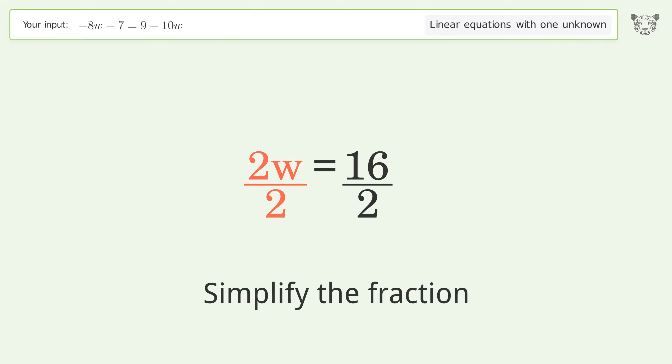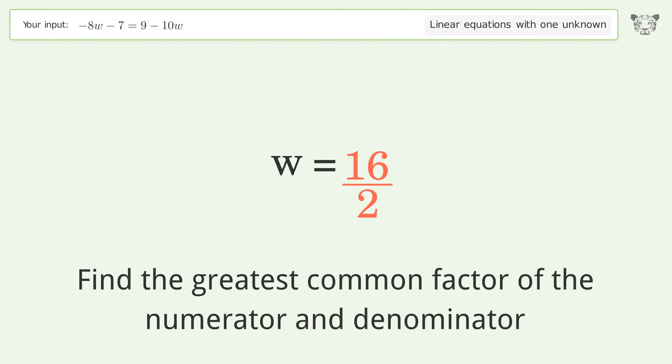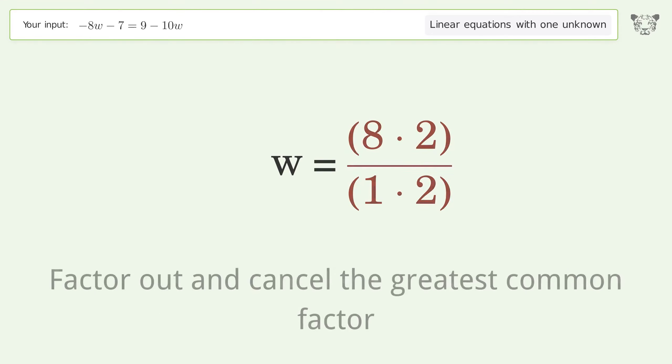Simplify the fraction. Find the greatest common factor of the numerator and denominator. Factor out and cancel the greatest common factor.